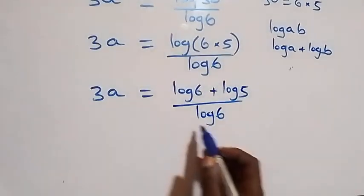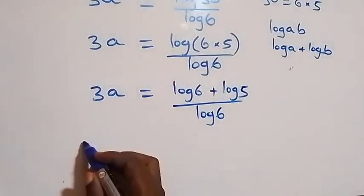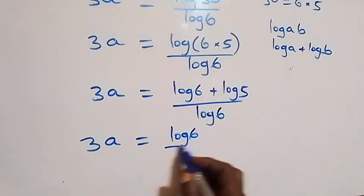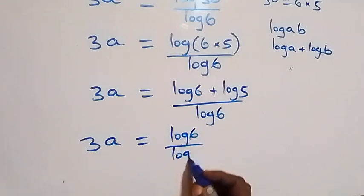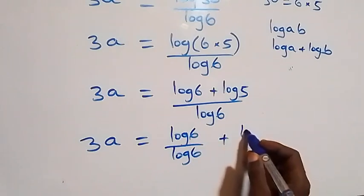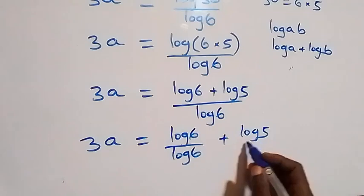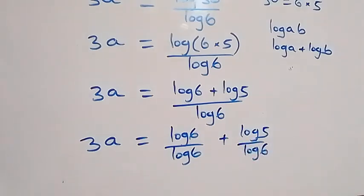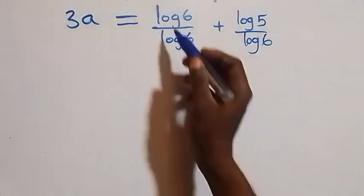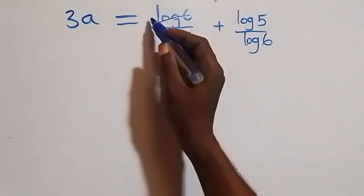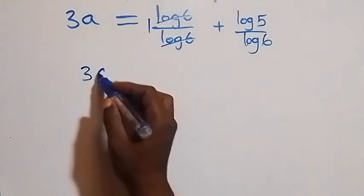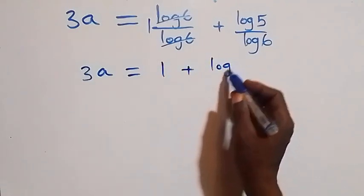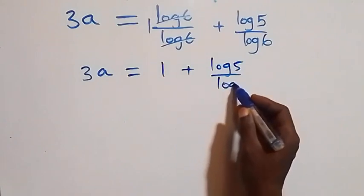We separate the fraction into two parts: 3a = log(6)/log(6) + log(5)/log(6). Since log(6)/log(6) = 1, this simplifies to 3a = 1 + log(5)/log(6).